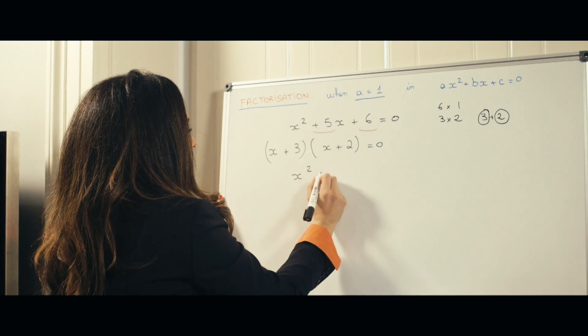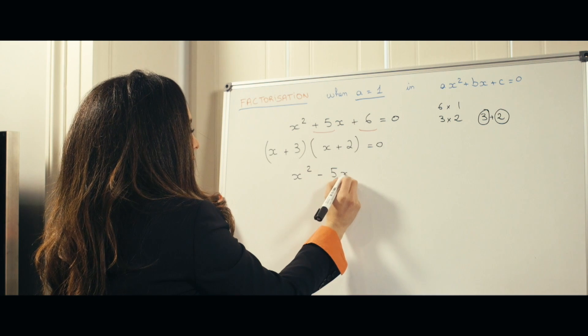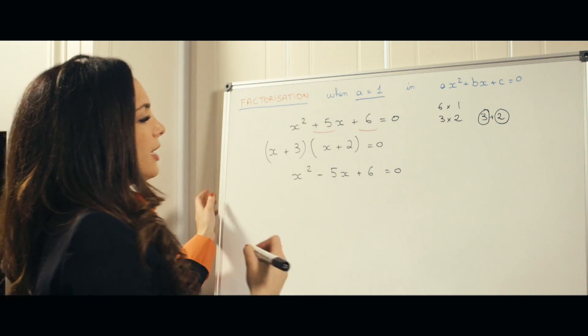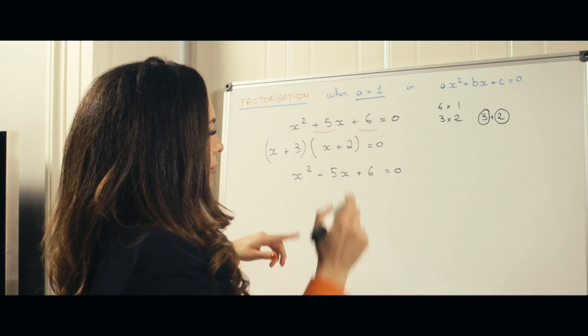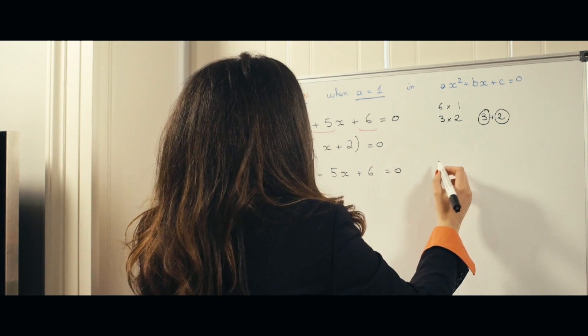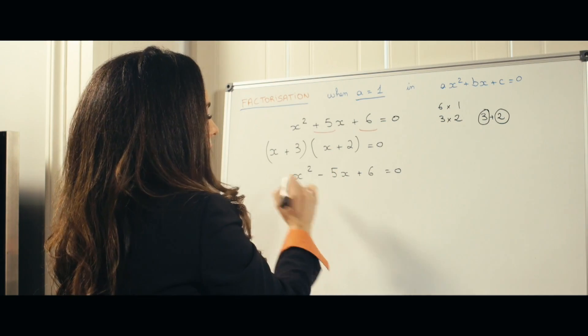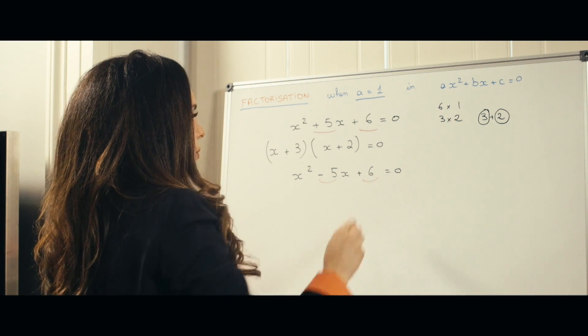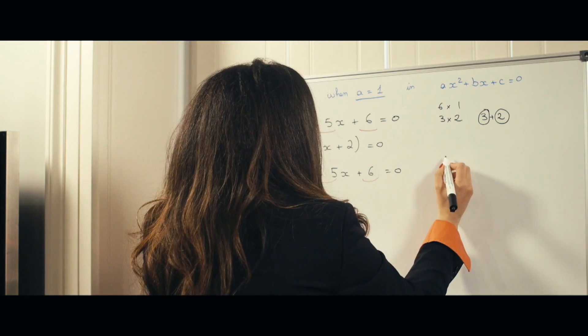Let's say x squared minus 5x plus 6 is equal to 0. So here, you still have the product 6, 3 and 2 would do that, but we have to use negative numbers because the sum has to be equal to minus 5.